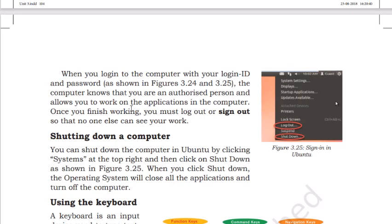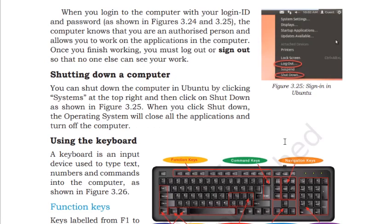In Windows, you go to the Start button and find the shutdown option. In Ubuntu, the shutdown option is in the top right corner settings. To use the keyboard: a keyboard is an input device used to type text, numbers, and commands.